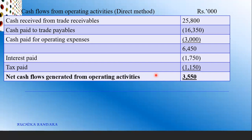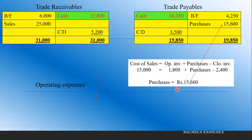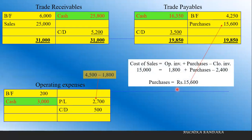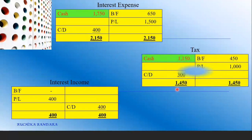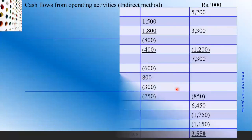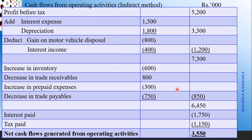When doing operating activities using the indirect method, you also end up with $3,550, but the way of doing it is different — the format is different. The ultimate value is the same $3,550. The interest paid and tax paid section is common to both formats.